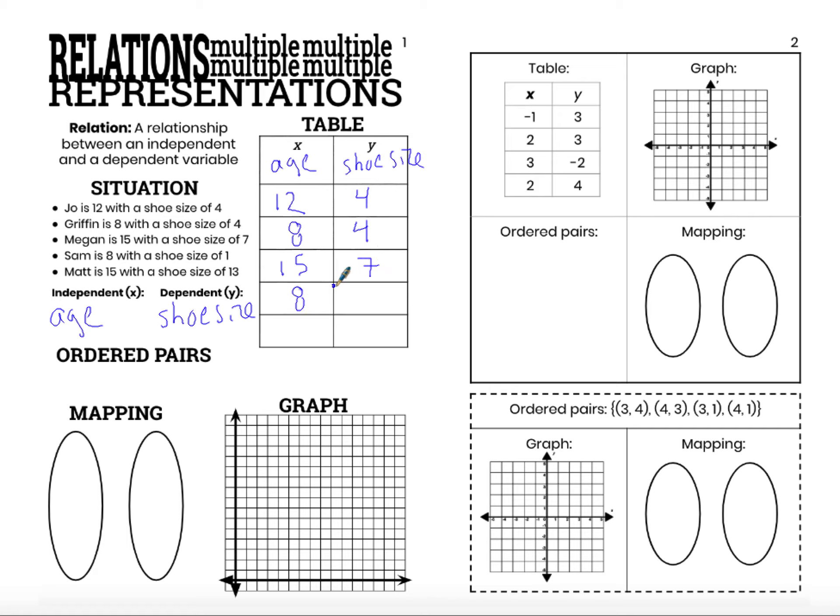Sam is 8, independent equals 8, dependent is 1. So X, 8, Y, 1. And then finally, Matt, another 15-year-old, this time with a shoe size of 13. So here's our relation. It's the set of all of these pairings of independent and dependent variables.